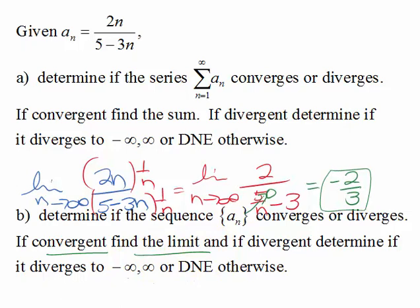Well that also then answers part A, that it diverges by the divergence theorem, because the divergence theorem says if you look at the limit of the terms in the series as n goes to infinity and that doesn't equal 0, then it diverges.